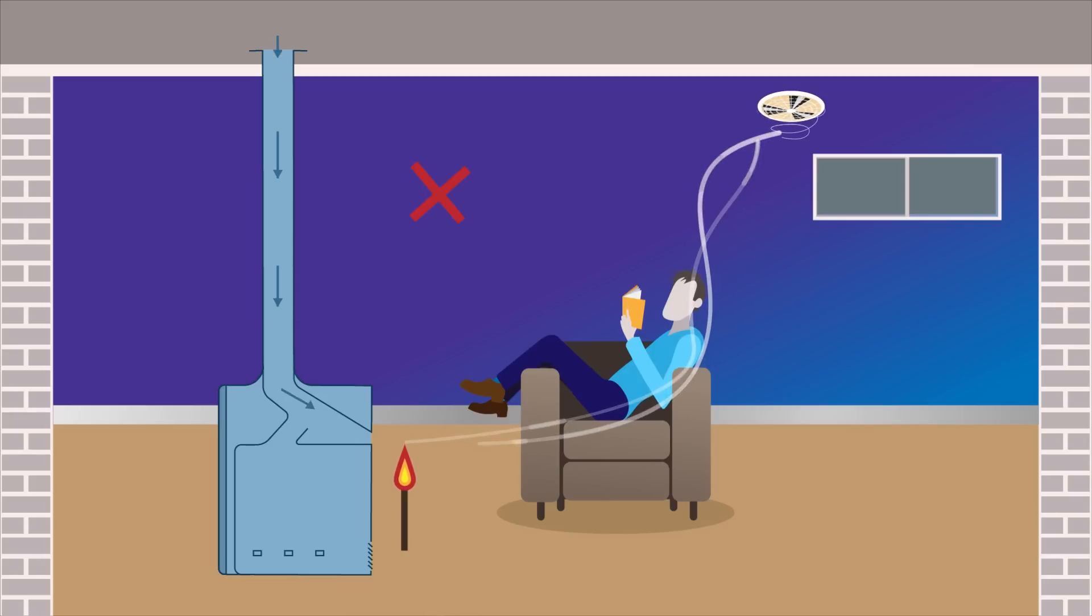If smoke is drawn away from the appliance, slowly open a window in the room where the appliance is installed to equalise the air pressure.